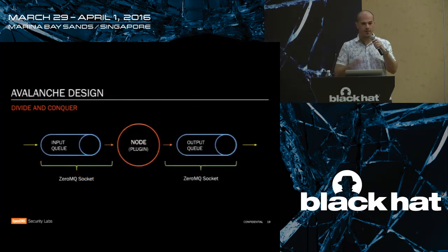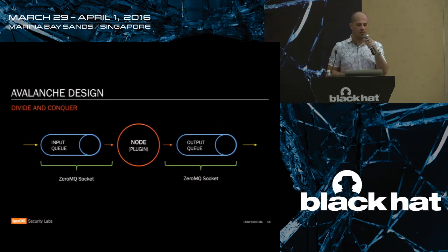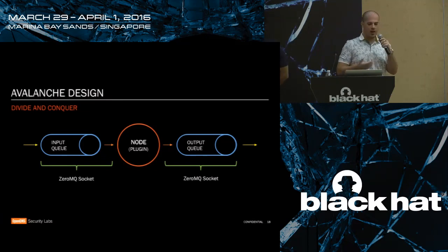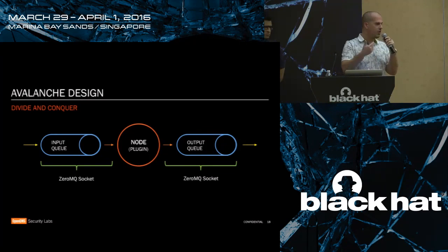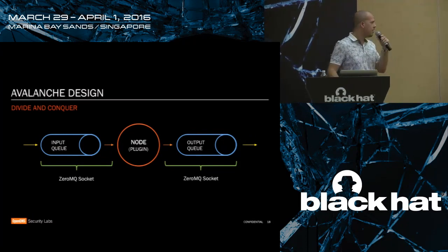If I zoom in on this pipeline, I can see the central piece of the puzzle — the node. A node is made of a plugin — your own code — but also an input queue and an output queue, all handled by ZeroMQ. ZeroMQ implements smart sockets. You can use many different message passing strategies, many different queuing strategies, and it handles reconnections and disconnections. It's an easy way to connect two sockets together and use message passing strategies.